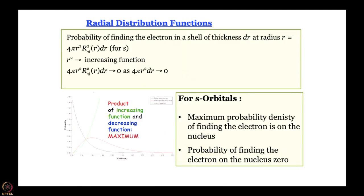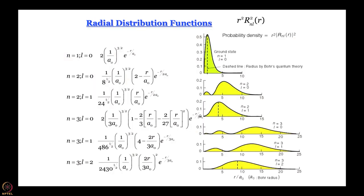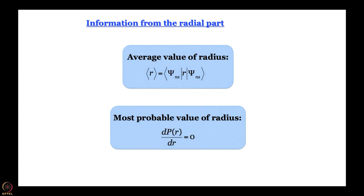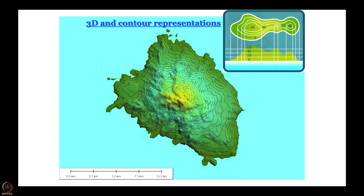The radial distribution function gives us the average and most probable value of radius, as well as the most important quantity — energy. We will actually plot them in front of you. The way we represent this is using a 3-dimensional representation, and since we cannot easily draw a model, the most convenient way is to use contours.